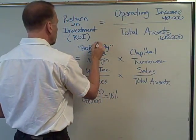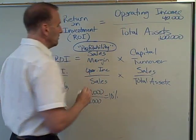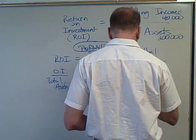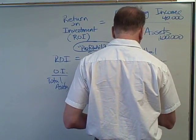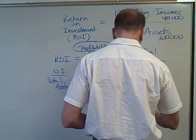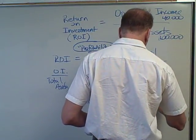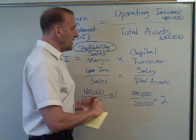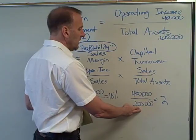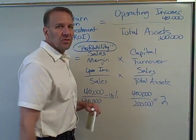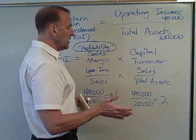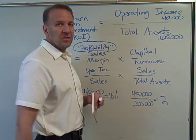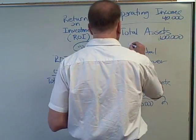Now the capital turnover: sales divided by total assets. Our sales are four hundred thousand and our total assets are two hundred thousand, giving us two. For every dollar in assets, it's generating two dollars in sales — double the amount. What I want to do is increase my sales associated with these assets. Capital turnover is actually looking at efficiency.